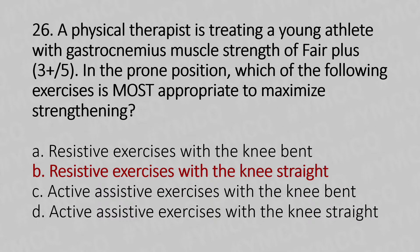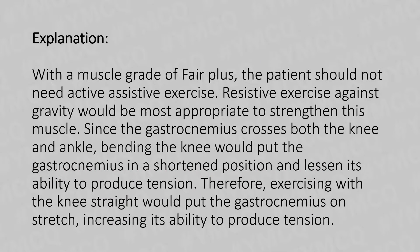Explanation: With a muscle grade of 5-plus, the patient should not need active assistive exercise. Resisted exercise against gravity would be most appropriate to strengthen this muscle. Since the gastrocnemius crosses both knee and ankle, bending the knee would put the gastrocnemius in a shortened position and lessen its ability to produce tension. Therefore, exercising with the knee straight would put the gastrocnemius on stretch, increasing its ability to produce tension.